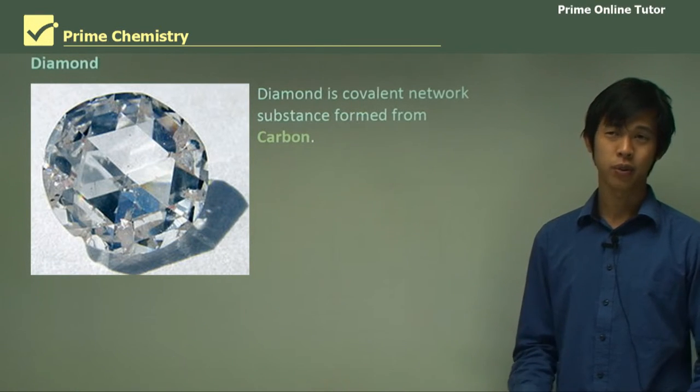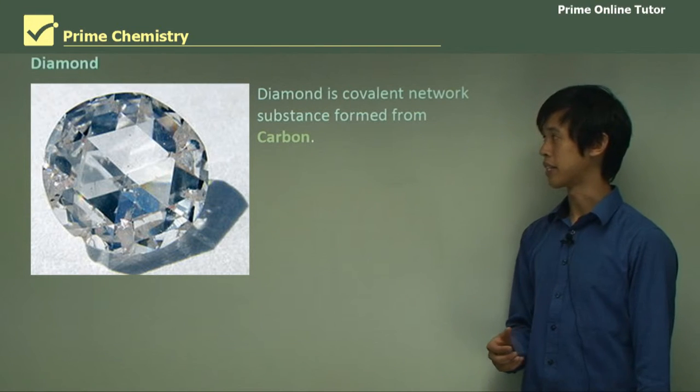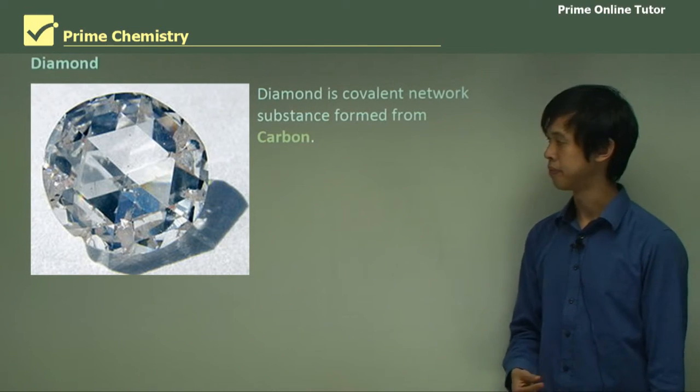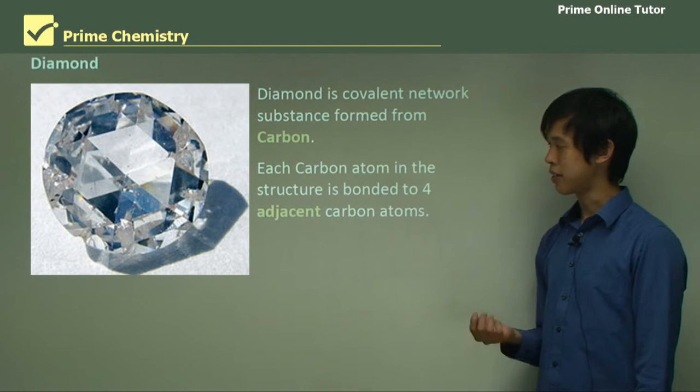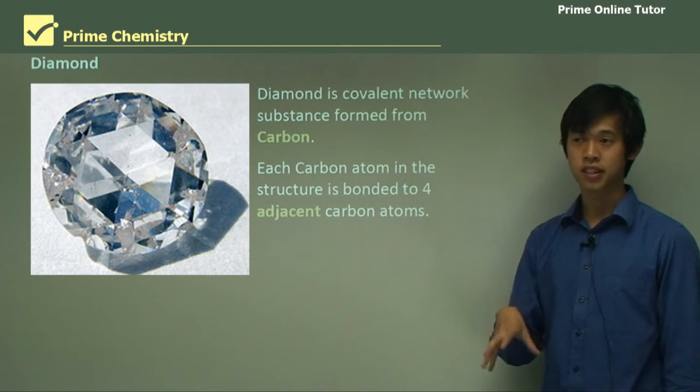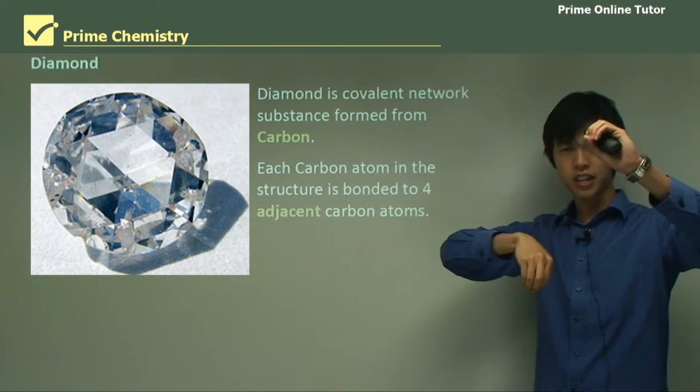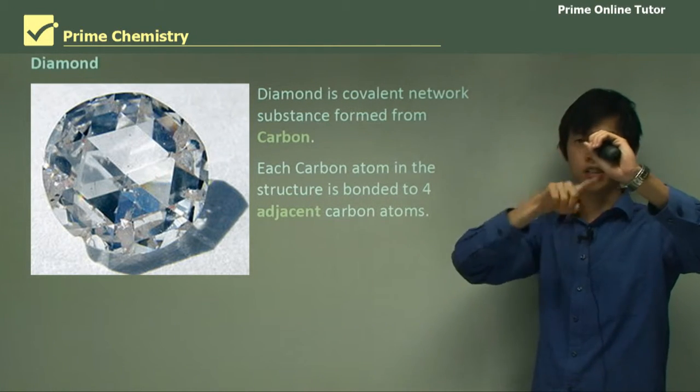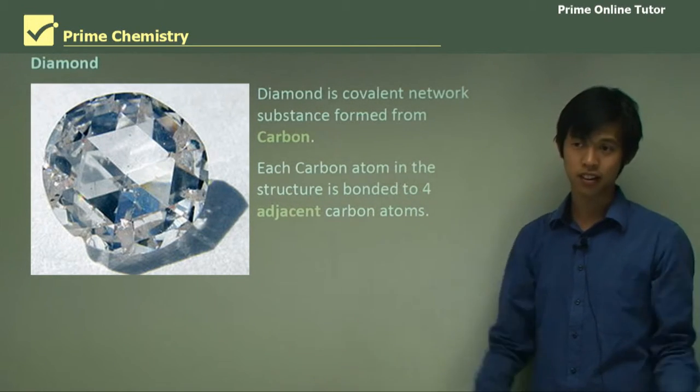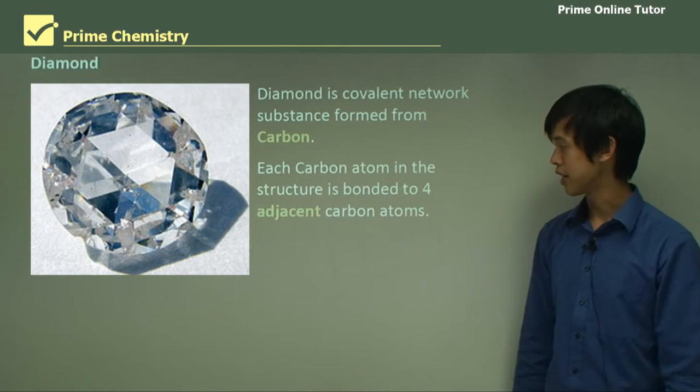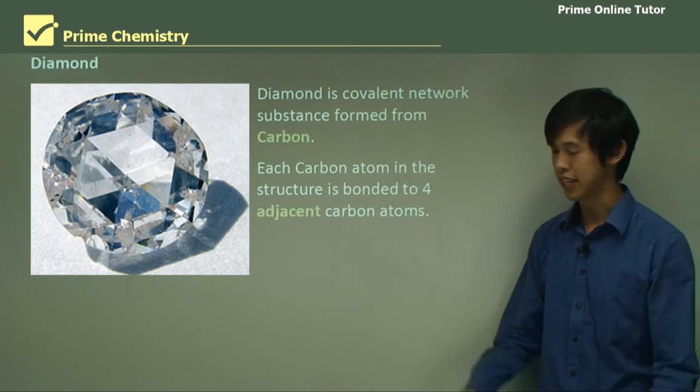So one example of a covalent network element would be diamond. Diamond is a covalent network substance formed from purely carbon. Each carbon atom in the structure is bonded to the four adjacent carbon atoms around it. So each carbon atom has four sitting around it, and it's bonded to each of those four. And each of those four is bonded to another four, and so on to an infinitum.